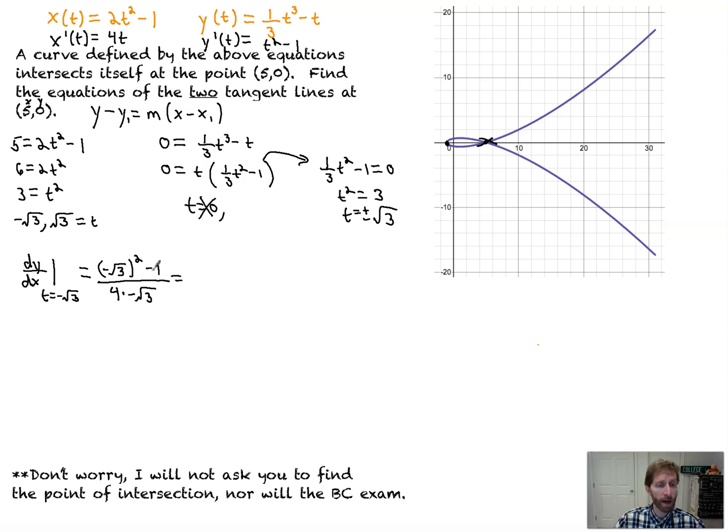It's going to be equal to, this will be 3 minus 1 is 2 over 4 times negative root 3 is negative 4 root 3, which is negative 1 over 2 root 3, and I'm not going to simplify that. Now,